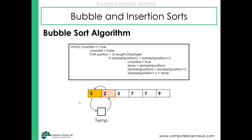This continues until a pass has taken place. If a pass takes place and there are no swaps, then 'unsorted' doesn't become true — it remains false and the loop finishes. The algorithm then knows that the final pass has taken place and that the data set is now sorted.